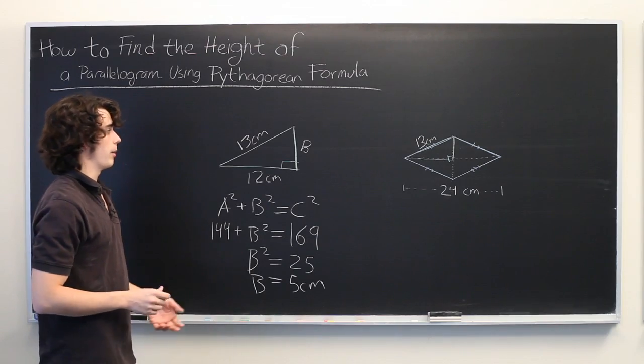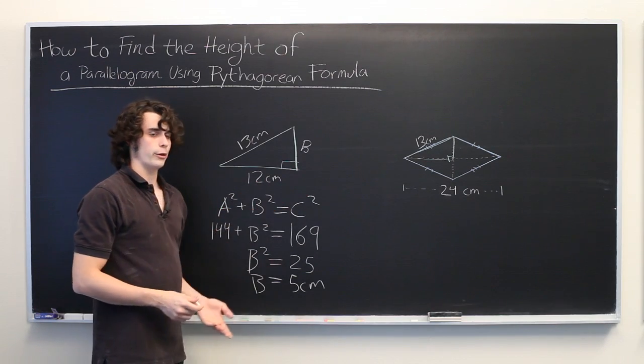It can't be negative 5 centimeters, since it doesn't really make sense for the leg of a triangle to have negative length.